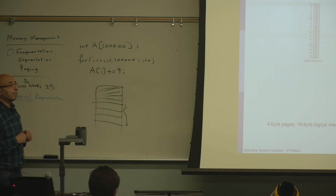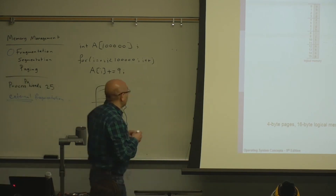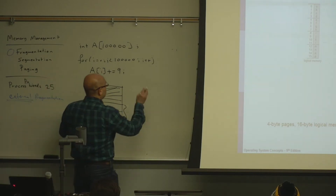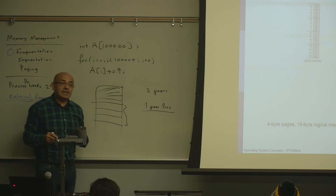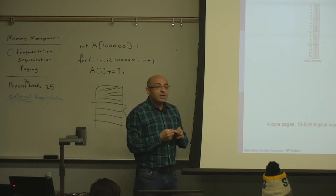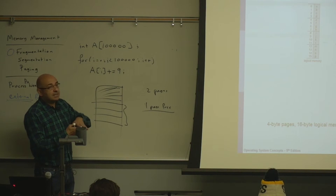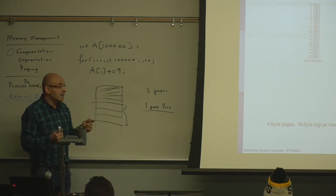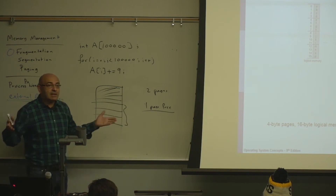If a process requests two pages and only one page is free, that is not fragmentation — that is a lack of memory. Fragmentation is when you have enough memory but it's fragmented and you cannot use it. When a process needs more than what's available, that's simply not having enough memory, not fragmentation.